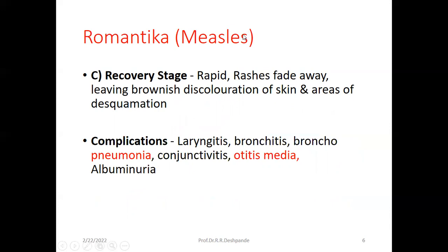The complications of measles may include laryngitis — inflammation of the larynx causing voice changes — bronchitis with cough, bronchopneumonia with high fever and pneumonic patches on the chest, conjunctivitis, otitis media (infection of the middle ear), and albuminuria — albumin appearing in the urine — which should be checked.